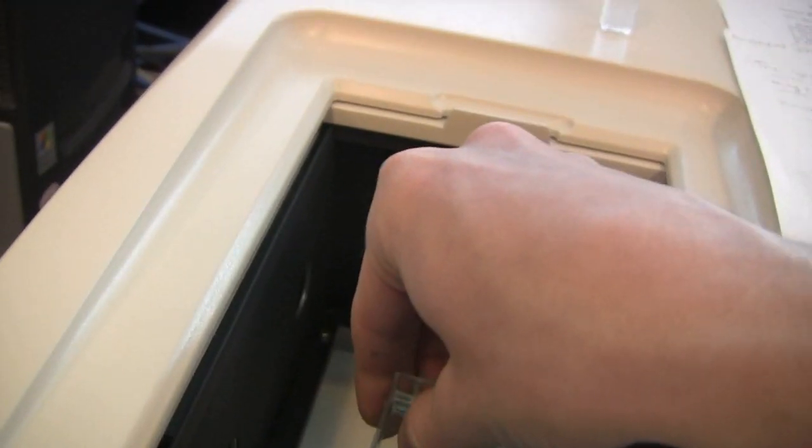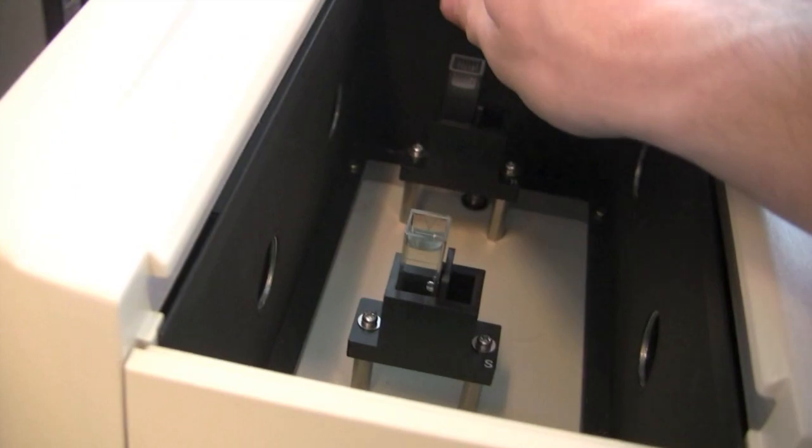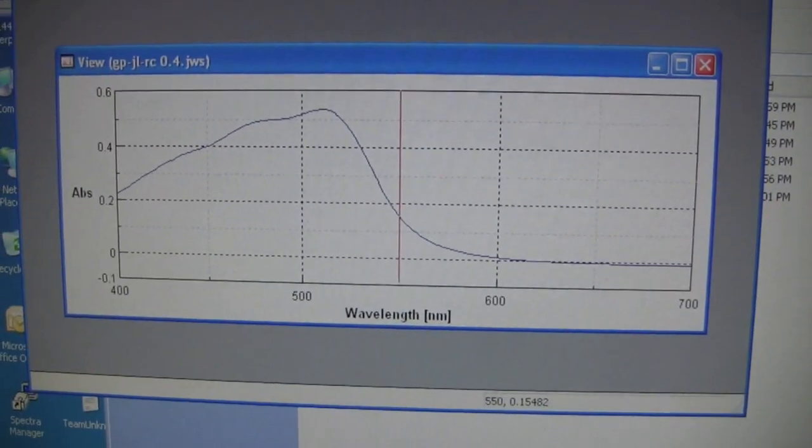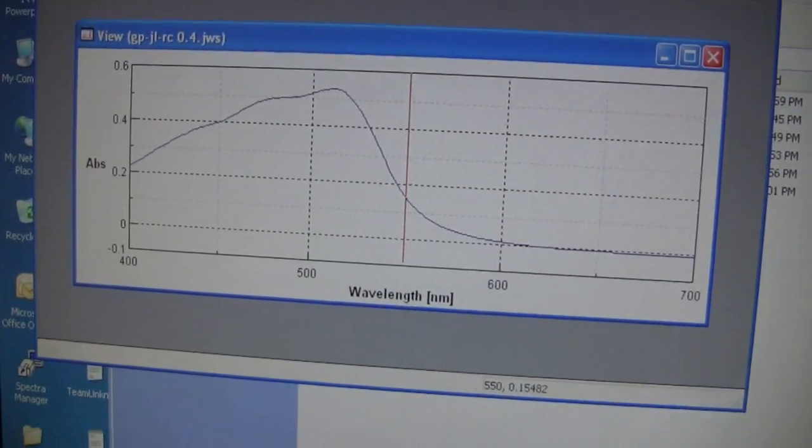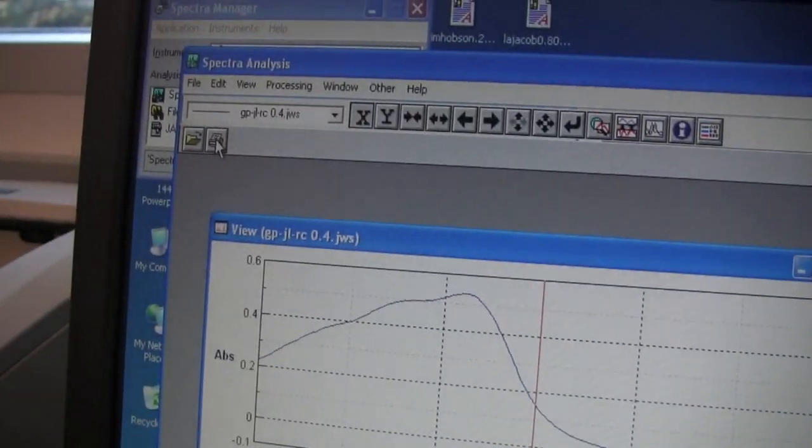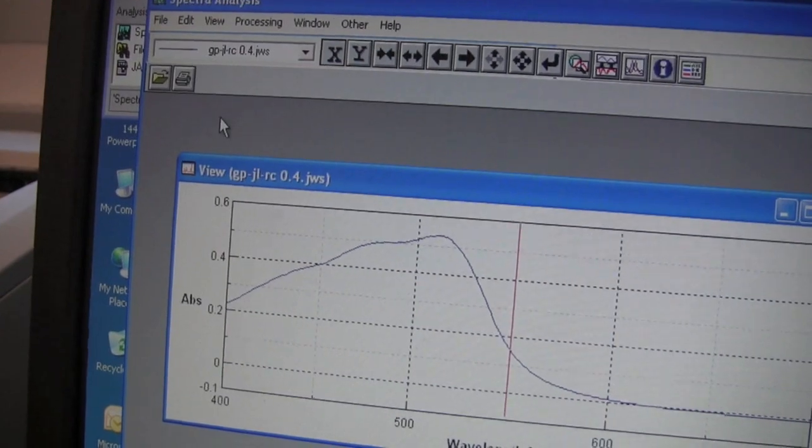Take the unknown concentration solution and follow all the same procedures as you did with the others. You should get a separate graph for this unknown concentrated solution. Also, print two copies of this for you and your partner.